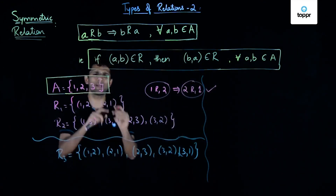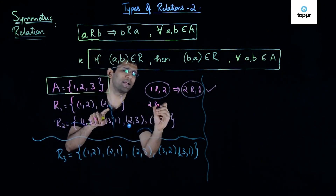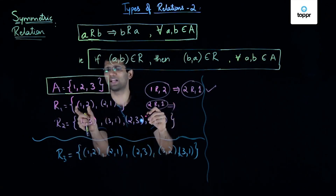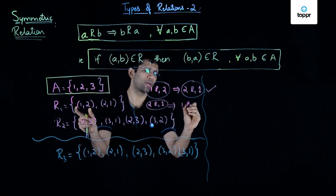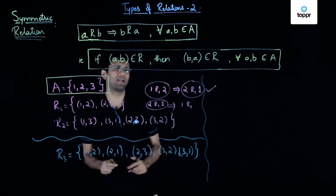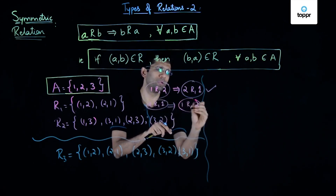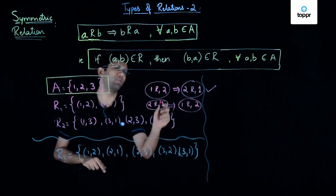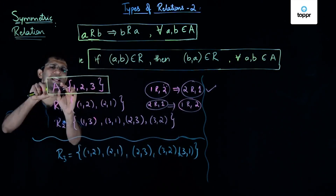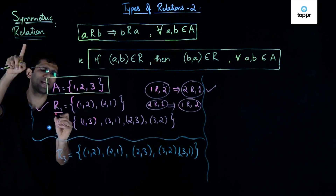Similarly, looking at the ordered pair (2, 1): if 2 is related to 1 by relation R1, then this implies that (1, 2) is also a part of R1, so 1 is also related to 2. Because both these implications hold for elements 1 and 2 of set A, we say that R1 is indeed a symmetric relation on set A.